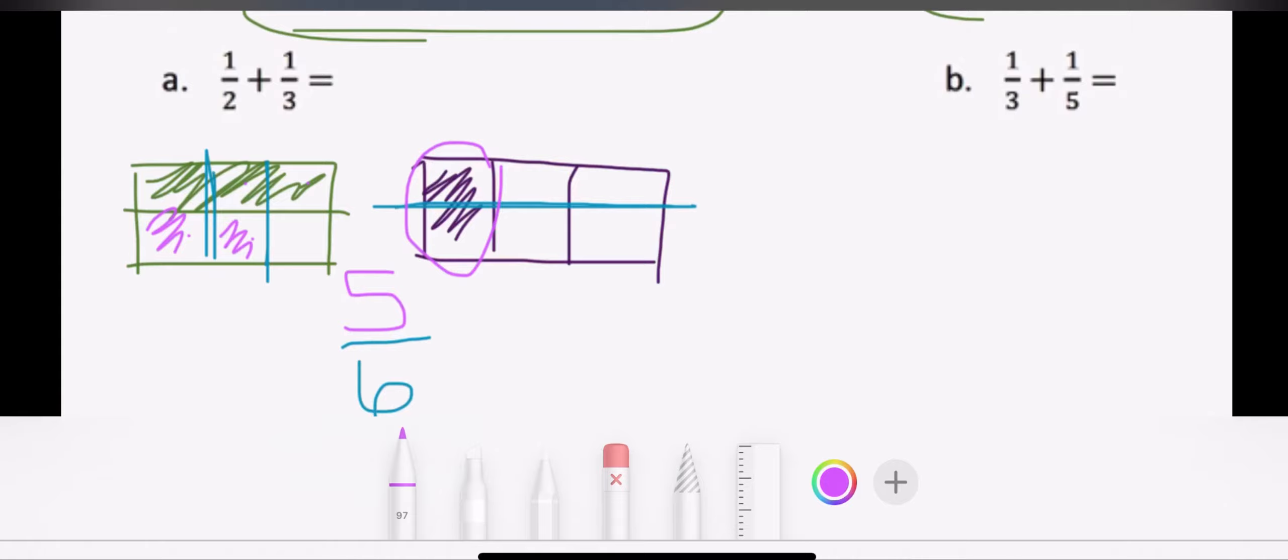And now I see that I have one, two, three, four, five out of six. So I can say one half plus one third equals five sixths. And when I think about dividing, I know that five is what we call a prime number, which means that it can't be divided by anything. So I won't be able to simplify this one.